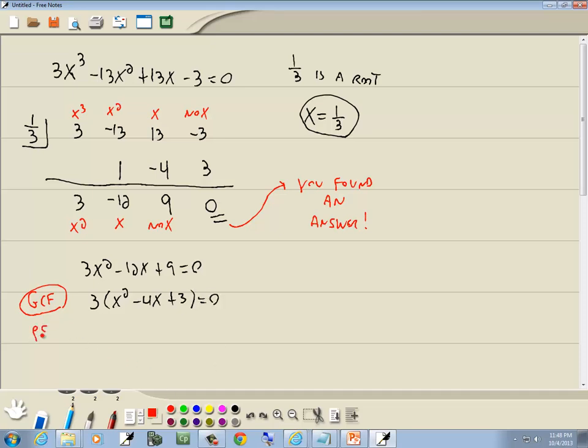Now, looking at what's inside the parentheses, this is the PSD method. We have x squared x, no x, no number in front of our x squared. So this factors as x minus 1 times x minus 3 equal to 0.